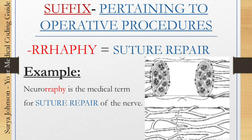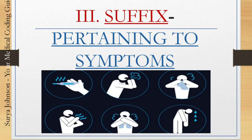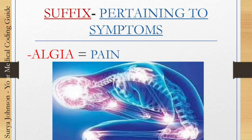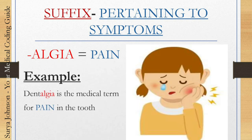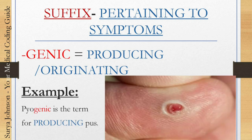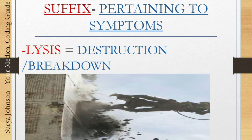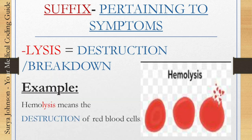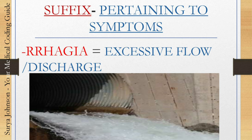Now we move on to the third category: suffixes pertaining to symptoms. The first one is '-algia,' which means pain. For example, dentalgia is the medical term for pain in the tooth. The next one, '-genic,' means producing or originating. For example, pyogenic means producing pus. The next one, '-lysis,' means destruction or breakdown. For example, hemolysis means the destruction of red blood cells.